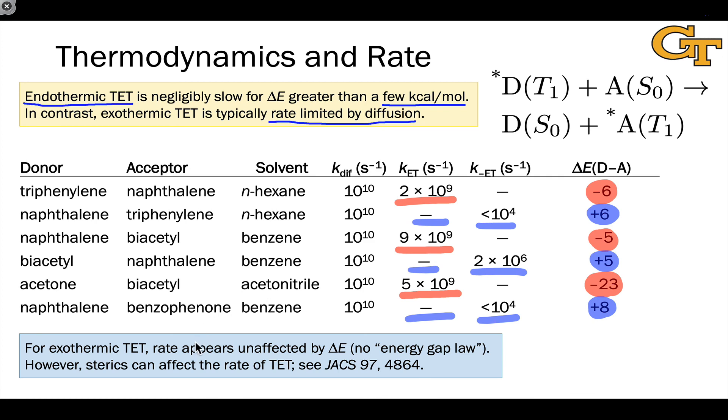However, triplet energy transfer's rate can be affected by sterics. Since collisions are necessary, and it's necessary for the orbitals housing the SOMO electrons in D star T1 to get in the vicinity of orbitals in A. When that's impeded due to sterics, the rate of triplet energy transfer can be slowed. And this paper highlights a prominent example of this.